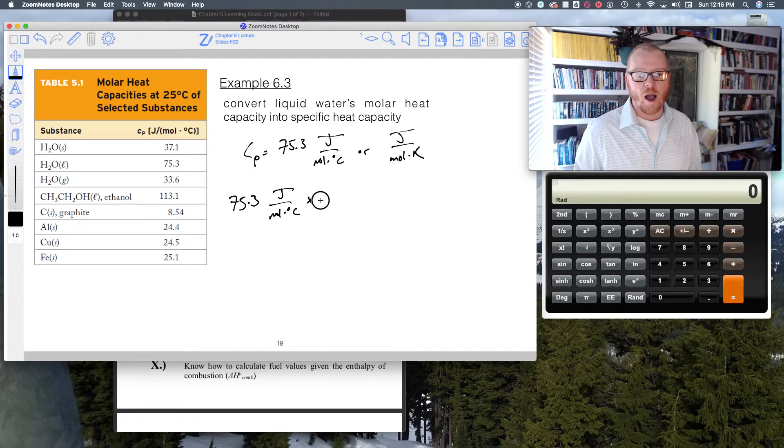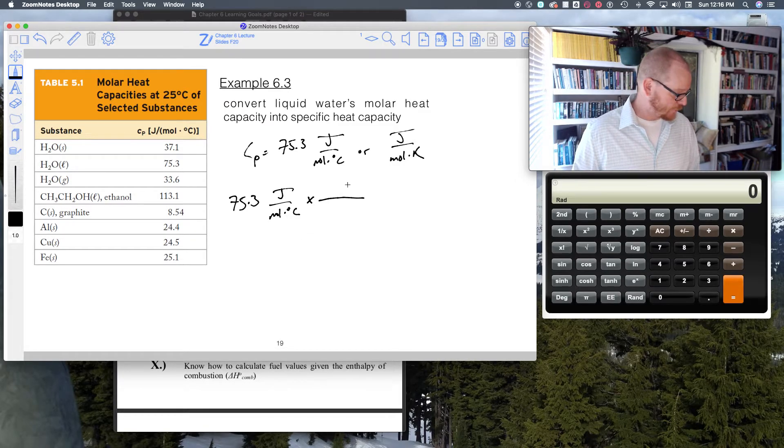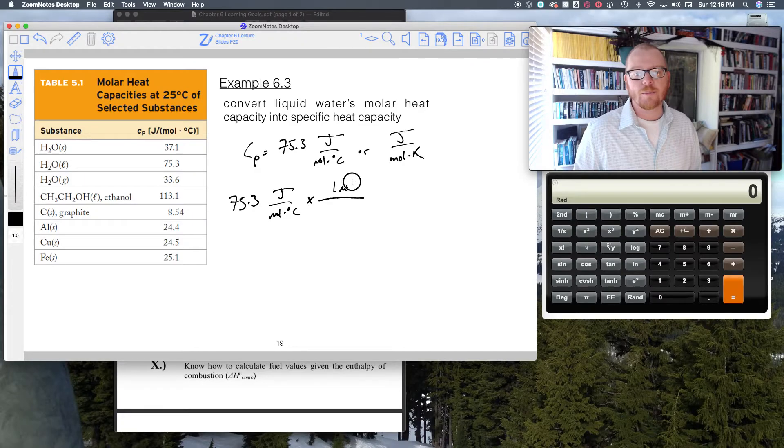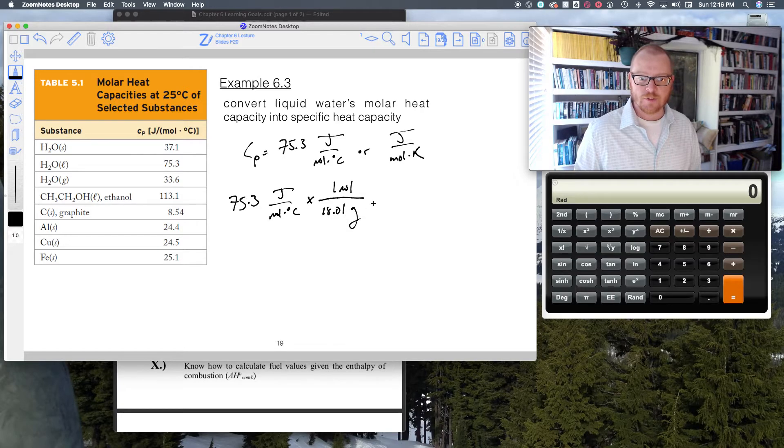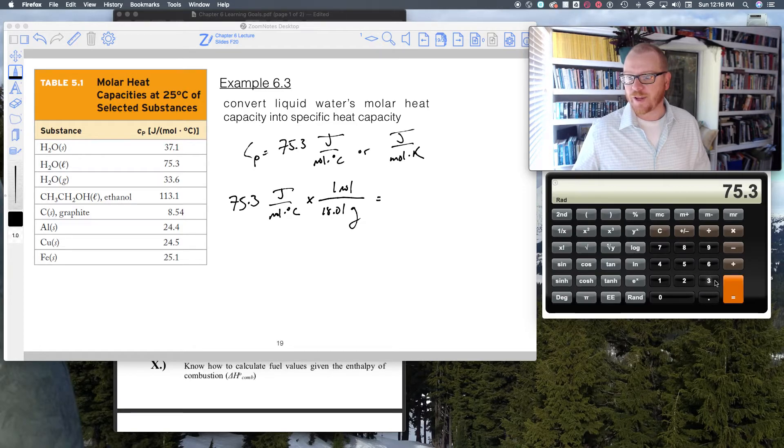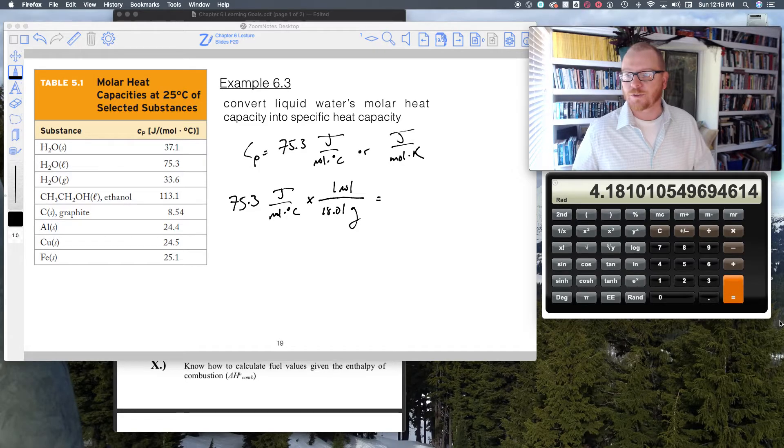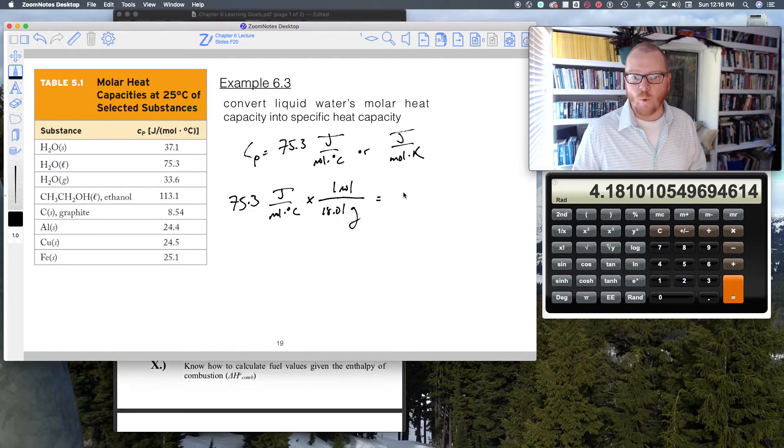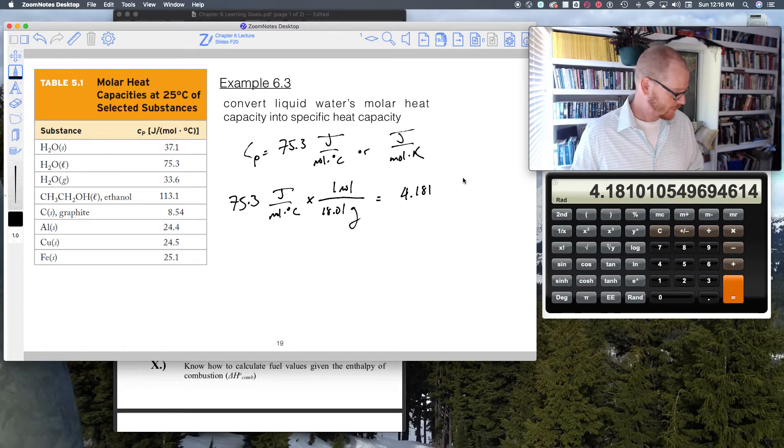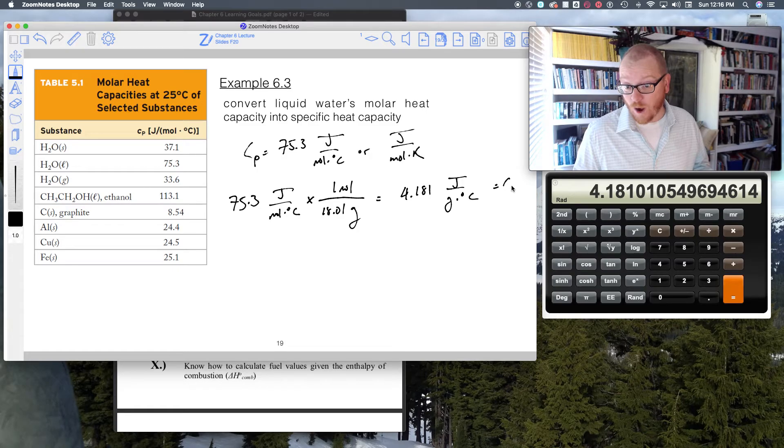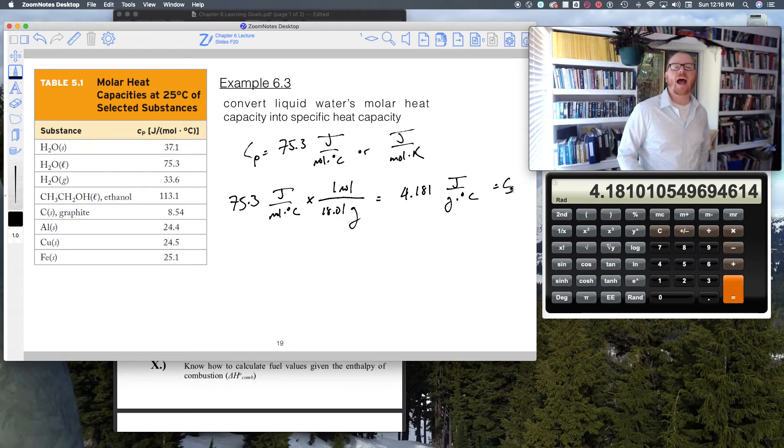I just want to convert moles to grams. For water, one mole of H₂O is 18.01 grams. When I do that, 75.3 divided by 18.01 equals 4.181 joules per gram per degree C, which would be the Cs for water.